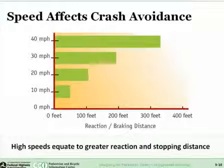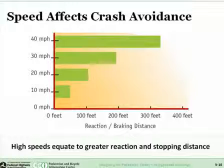If you look at the relationship between vehicle speed and stopping distance, there are two components: reaction distance — the distance a driver travels while perceiving a hazard and hitting the brake, roughly a second and a half — and braking distance, how long it actually takes to come to a complete stop. At slow speeds around 10 miles per hour, a motorist can stop in about 50 feet. But when traveling at 40 miles per hour, it may take more than 300 feet to stop.